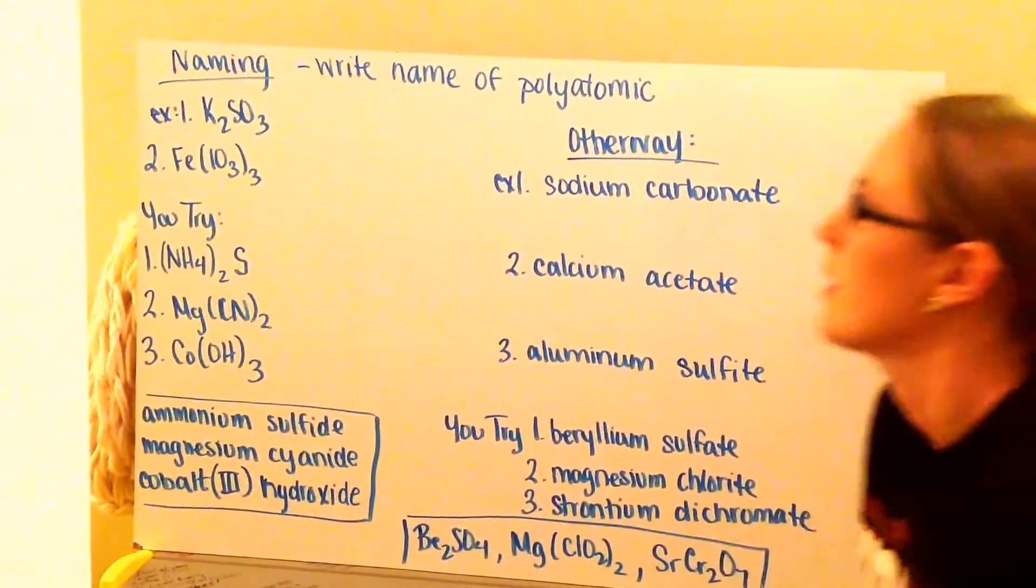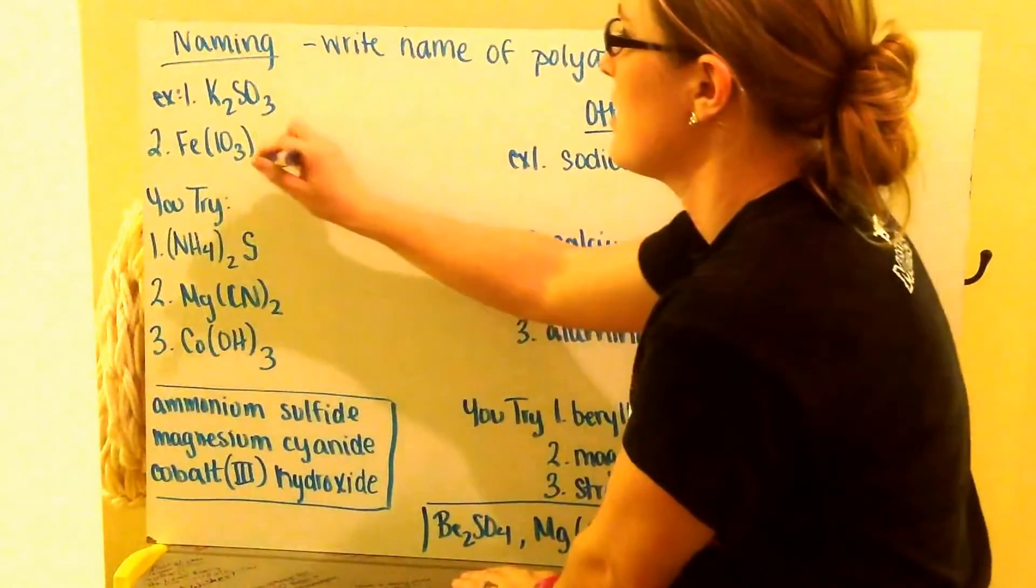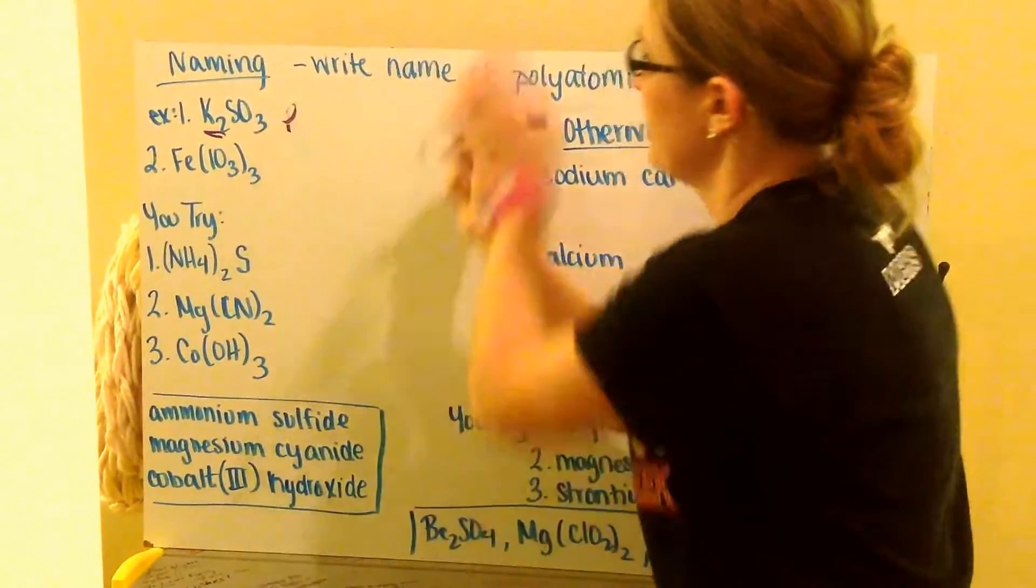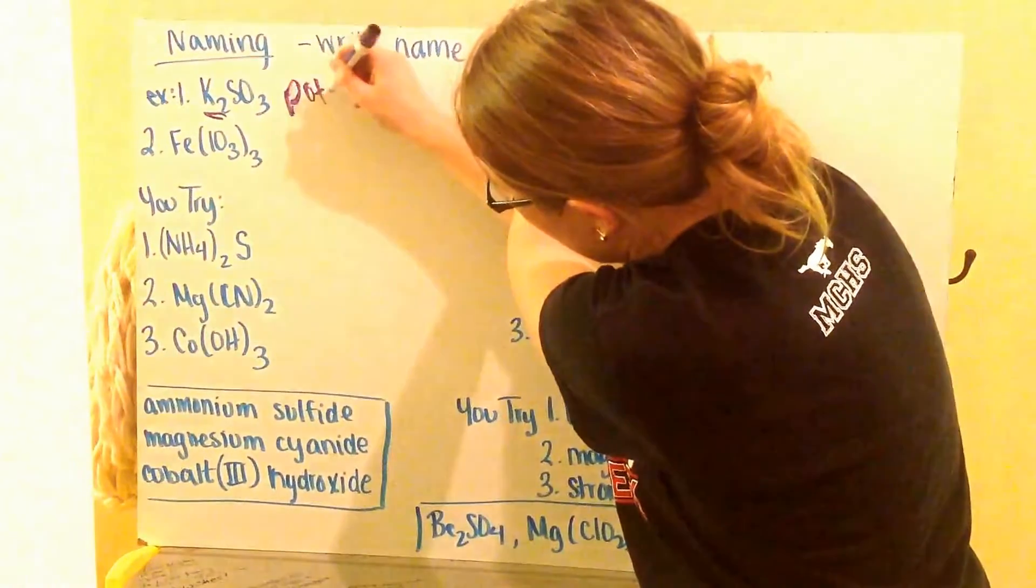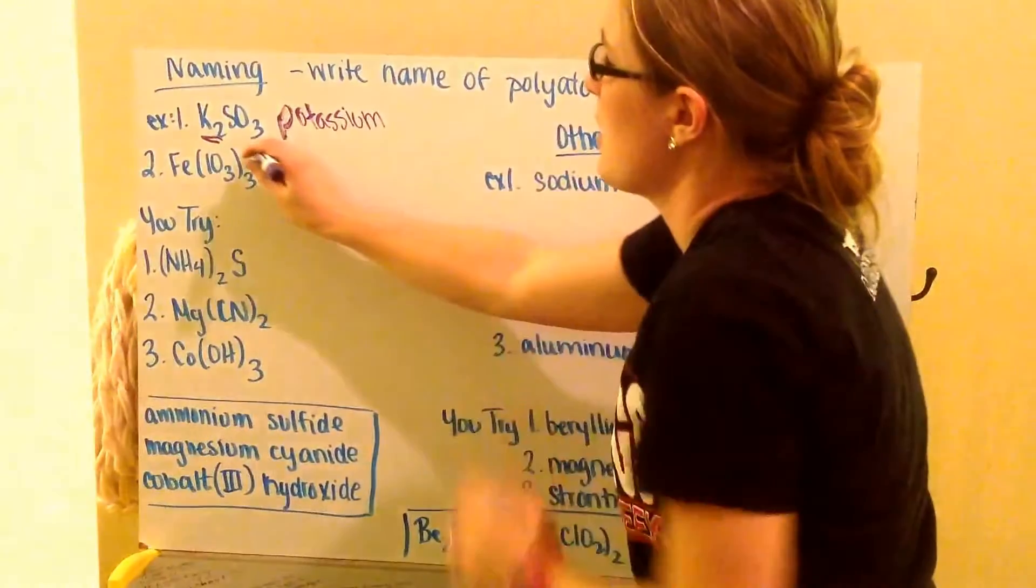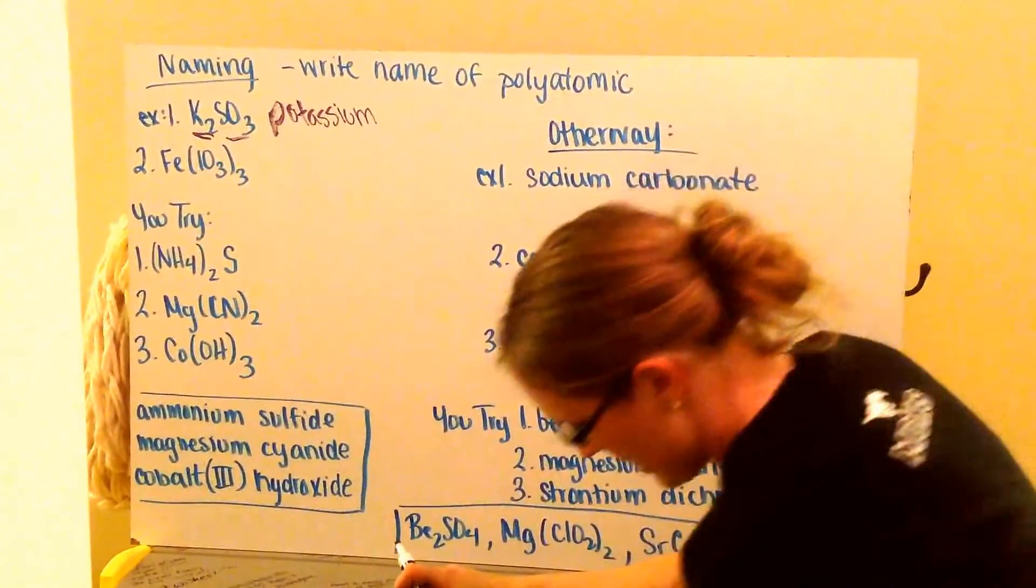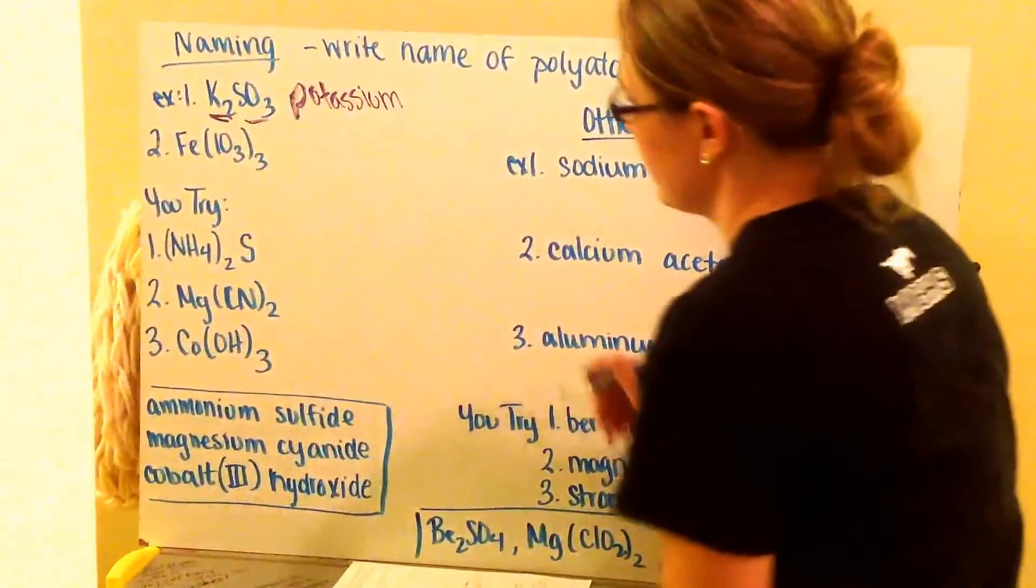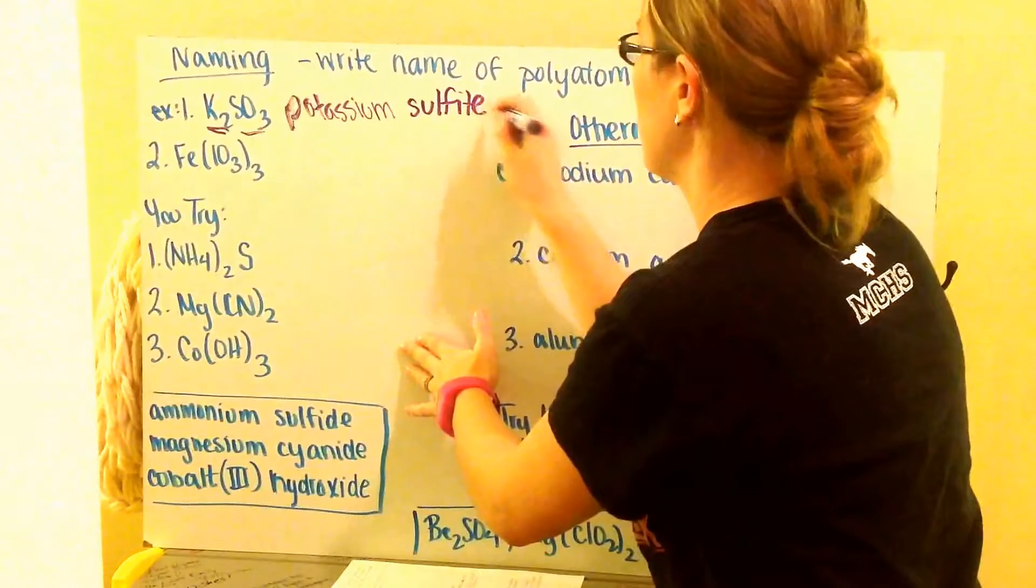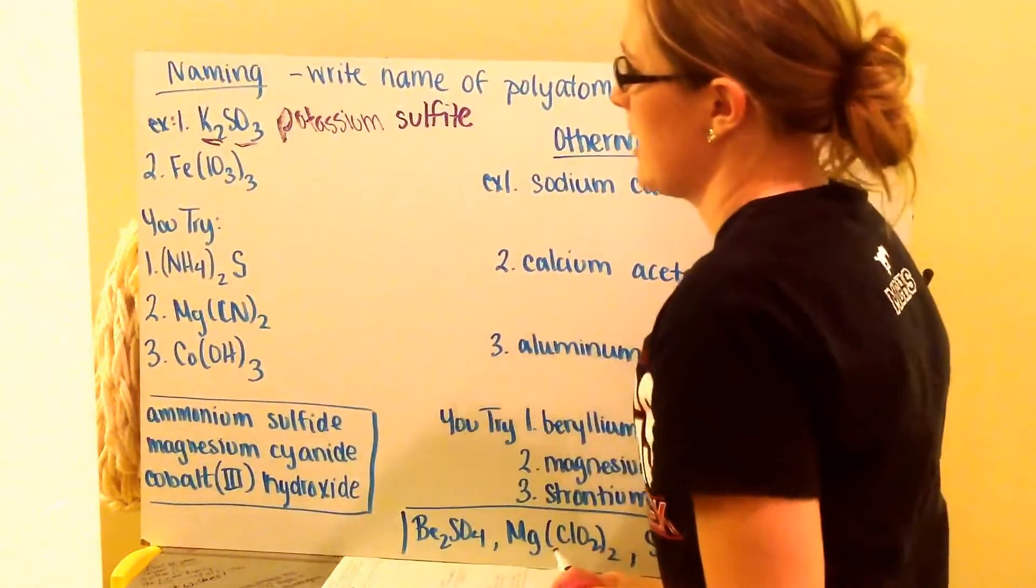Some examples. Example one, I have K2SO3. So first I look, I have my metal, K2, and that's just potassium. SO3 I have here. This is my sulfite ion. So I just write potassium sulfite. I don't have to change the name of my polyatomic ion at all.